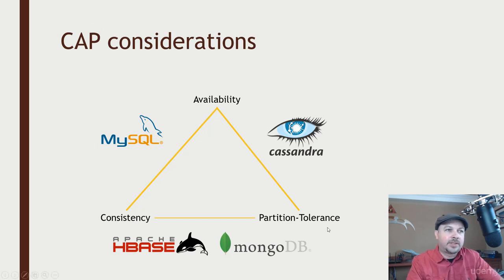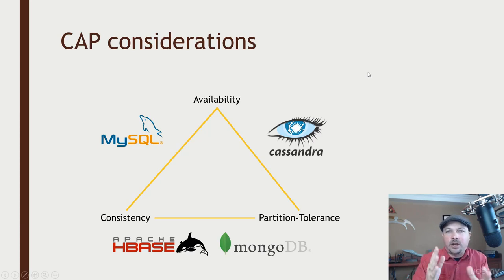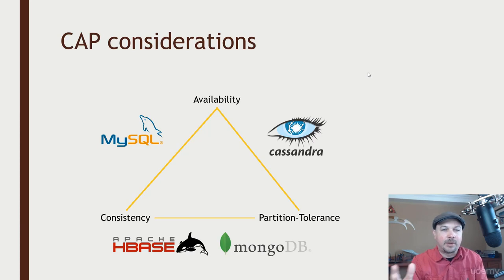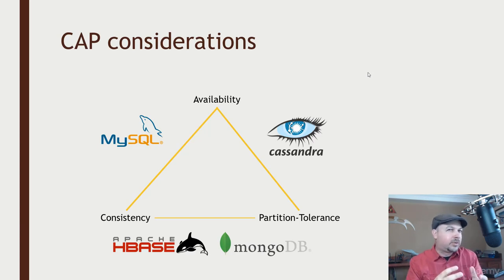Understand how to read this diagram. Cassandra, for example, lies on the availability and partition tolerance side of the triangle, favoring these two over consistency. When we talk about HBase and MongoDB, they are favoring consistency and partition tolerance above availability. I should point out that the CAP theorem isn't really a hard and fast rule — it sounds like dogma when people talk about it, but the reality is these tradeoffs have become a little bit more loose in recent years.